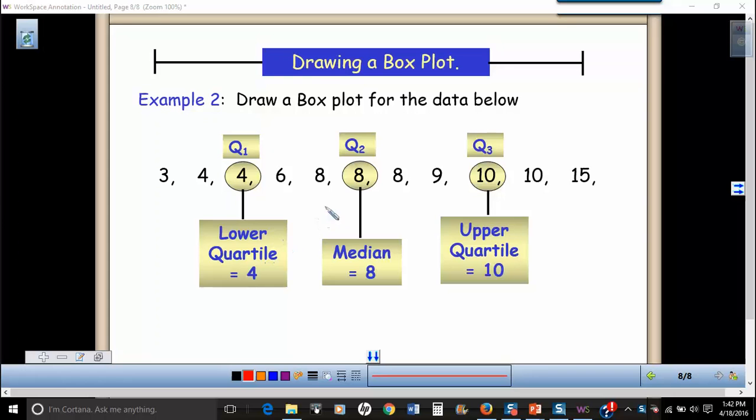Next, I would find the median of the lower half of the values, which is four. So four would be my lower quartile. And my median of the upper half would be 10. So these five numbers, the middle number is 10, and so 10 is going to be my upper quartile.